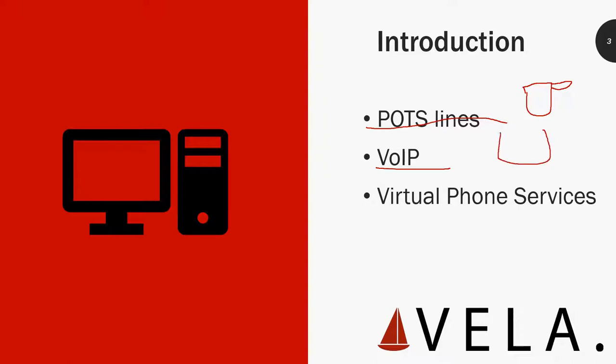Voice over IP — very cool. We get those Cisco phones with screens, and they do really cool stuff like video over IP. You can teleconference and do all these fancy things that are very useful in the business enterprise environment.